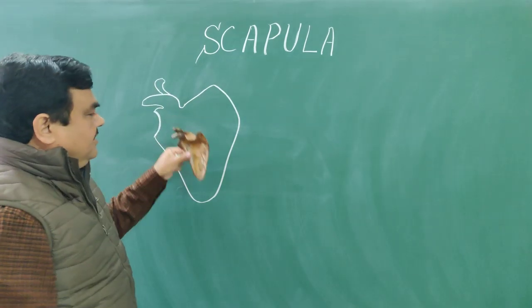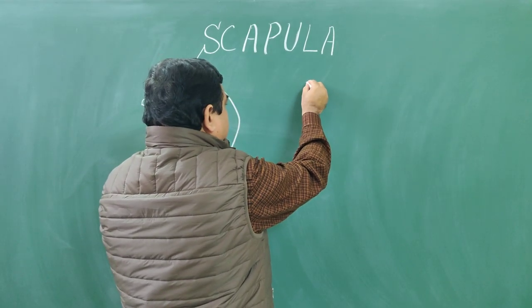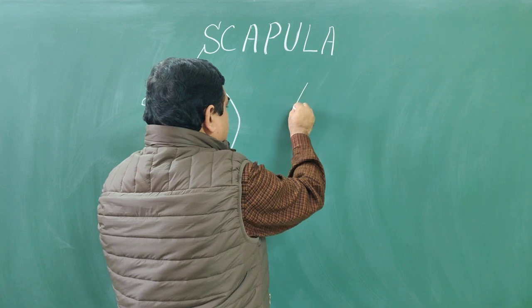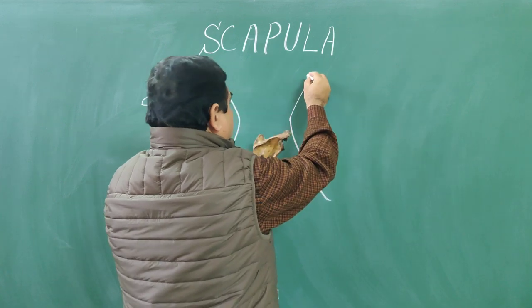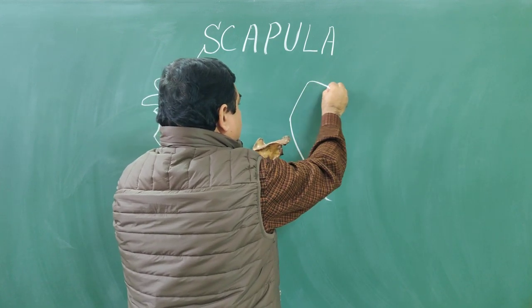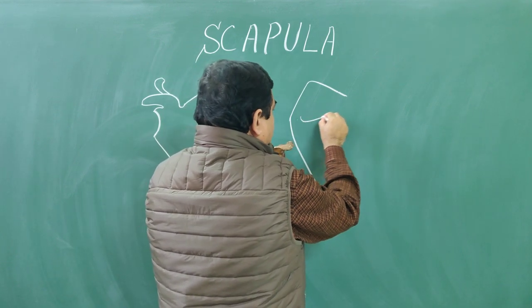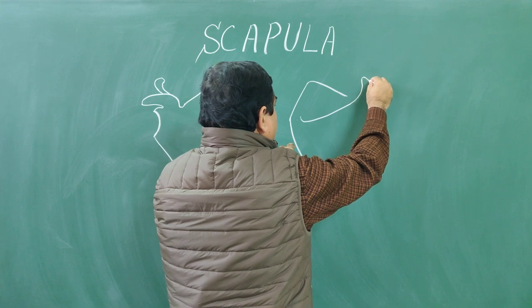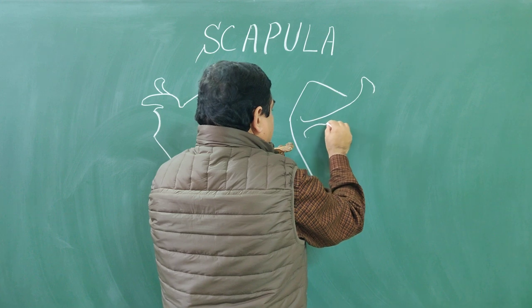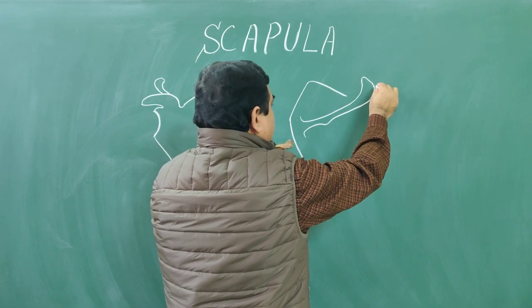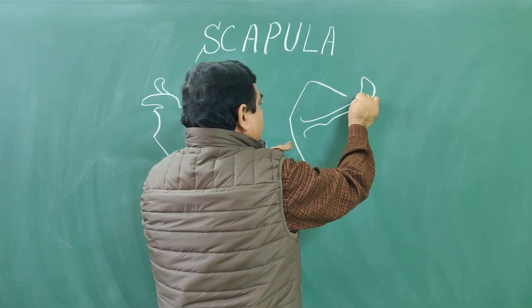Acromion process. This is the anterior view and this is the posterior view. Here is the posterior view.